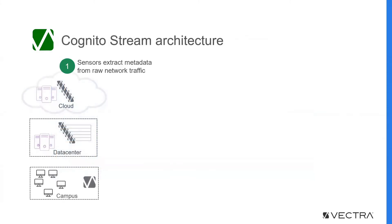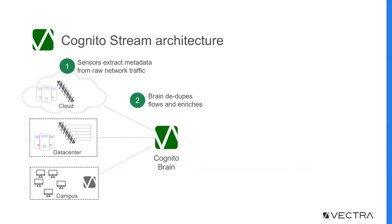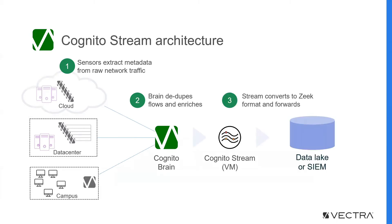Deployments are quick and easy. Organizations can typically deploy in 30 minutes or less. Sensors collect metadata from different parts of the network, including cloud, data center, and campus. The sensors connect to a central entity that deduplicates the flows and runs the host identification and enrichment algorithms.